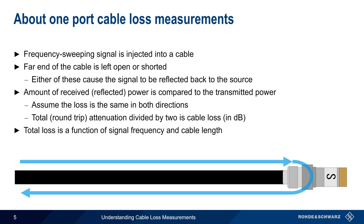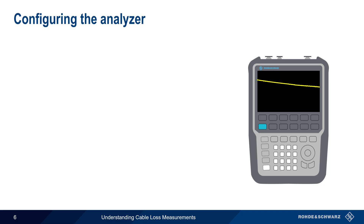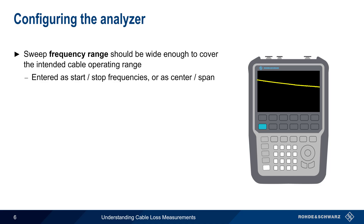As mentioned earlier, the total loss of the cable is a function of both the signal frequency and the cable length. Configuring a VNA for cable loss testing involves three main groups of settings. The first is specifying the frequency range over which the tracking generator, or stimulus signal, is to be swept. This range should cover the frequencies for which the cable will be used, and can be entered either as start and stop frequencies, or as a center and span.